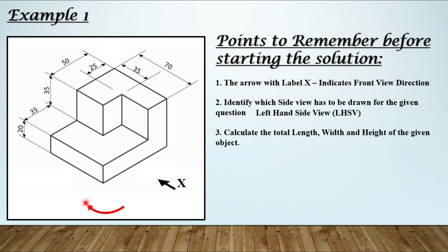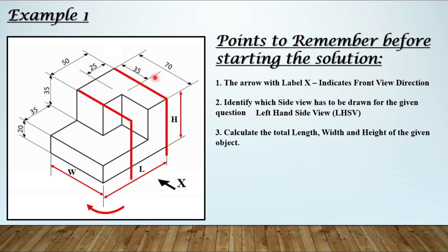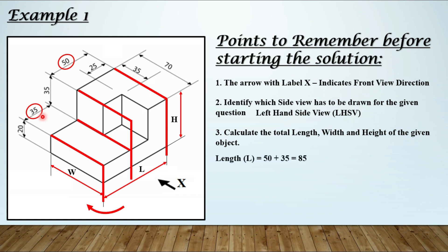Third point: calculate the total length, total width, and total height of the object. Whatever arrow of your front view direction is shown, perpendicular to it is your length. Parallel to it will be your width, and the vertical dimension from bottom to top is your total height. From this edge to this edge — this dimension is specified as 50 mm, and from this edge the remaining portion up to this corner is 35. So 50 plus 35 gives us 85.